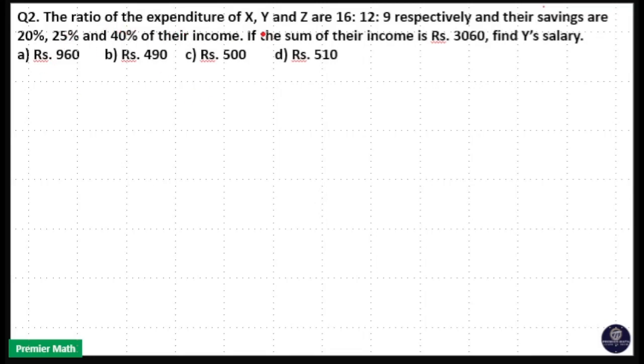The ratio of expenditure of X, Y and Z are 16 is to 12 is to 9 and their savings are 20%, 25% and 40% of their income. If the sum of their income is Rs. 3060, find Y's salary.